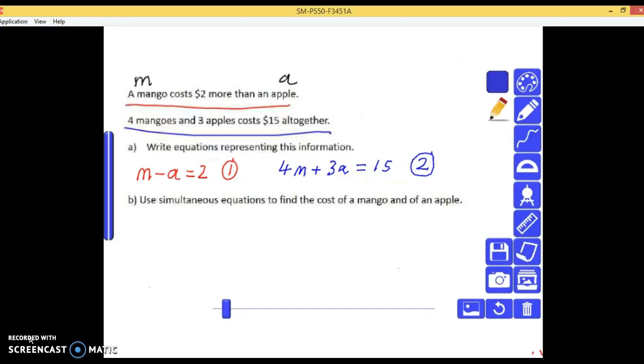All right, now we can use elimination again here, but the coefficients don't match. We've got a 1m and a 4m and a negative 1a and positive 3a. We need those numbers, those coefficients to match somewhere. There's a couple of different ways of going about this, but personally, I think the quickest one is to take equation one and multiply it by three. If you did it a different way, just hang on and see if you end up with the same answer, which gives us this.